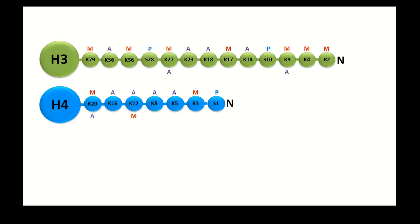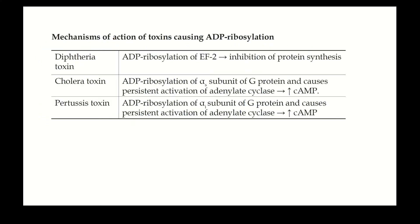K is the one-letter code for lysine, S for serine, R for arginine. Lysine can be methylated or acetylated. Serine is phosphorylated because it contains the OH group. Arginine is methylated. So in phosphorylation, serine is involved; in methylation, arginine is involved; and lysine is the main target for acetylation and ubiquitination.